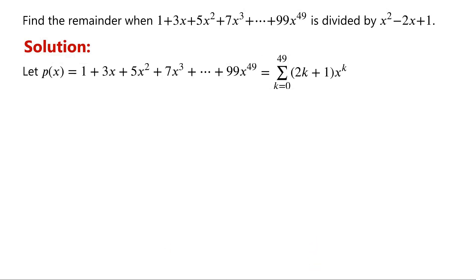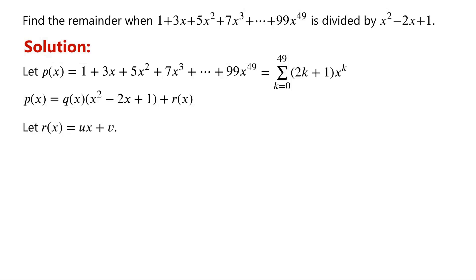Because we want to find the remainder when the polynomial is divided by x squared minus 2x plus 1, P of x can be written as Q of x times x squared minus 2x plus 1, plus R of x. Where Q of x is equal to the quotient and R of x is equal to the remainder. As the divisor is x squared minus 2x plus 1, the remainder must be linear. We let the remainder R of x equal ux plus v.